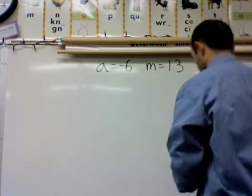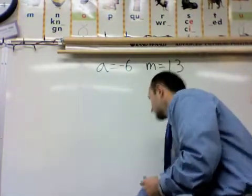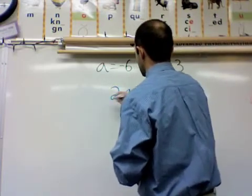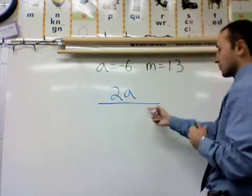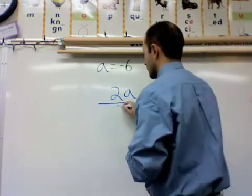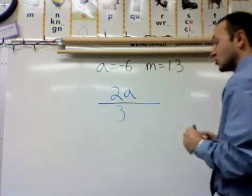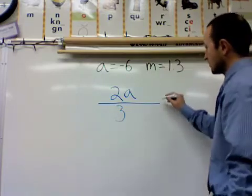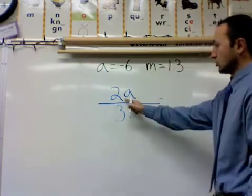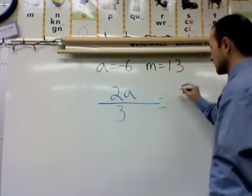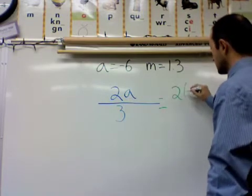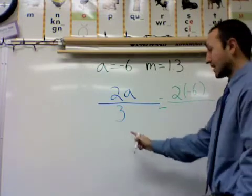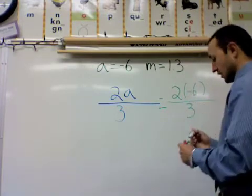This time we will take 2A and we're going to divide because remember the fraction bar will mean divide. We divide 2A by 3. The first step is to rewrite this so it becomes 2 times A which is negative 6. 2 times negative 6 and it's going to be divided by 3. That stays the same.